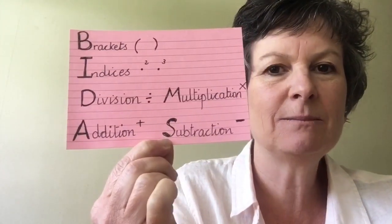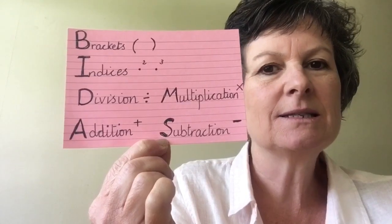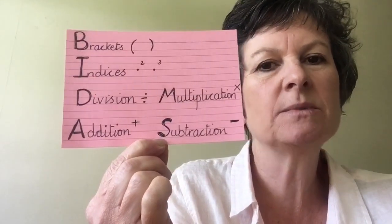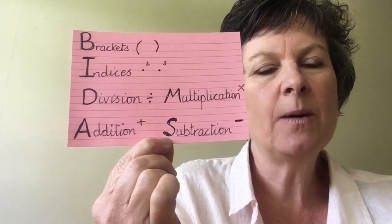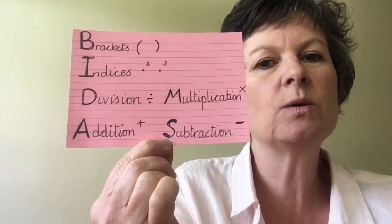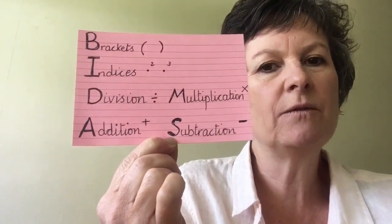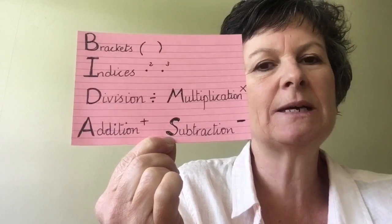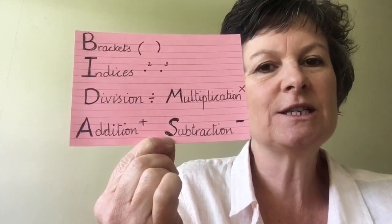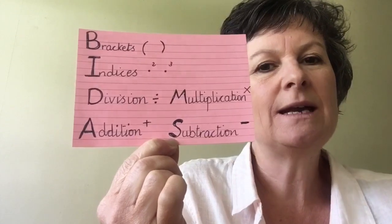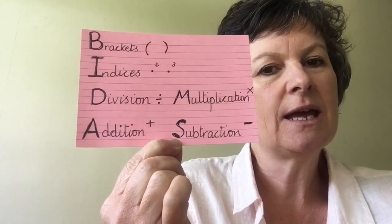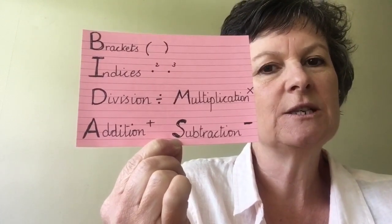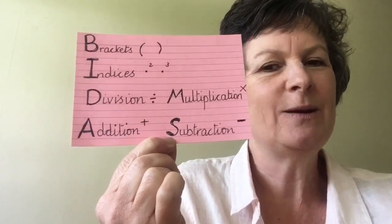You could try and add in some further challenge by including BIDMAS — so thinking about brackets, indices (which is your square numbers or your cube numbers), division and multiplication. Remember they happen at the same time working left to right because they're of equal importance. So if multiplication comes before division in the calculation, you do the multiplication first. Same with addition and subtraction — working left to right, but they are of equal balance. So if subtraction came first, you would do that before the addition. But I know you know that anyway — that's just a little reminder.